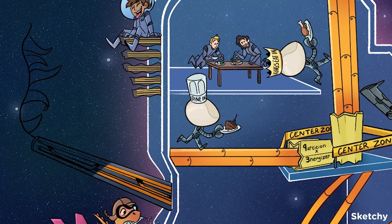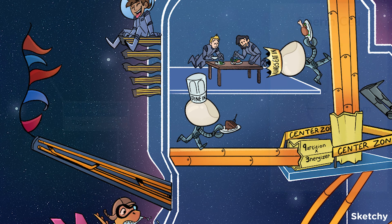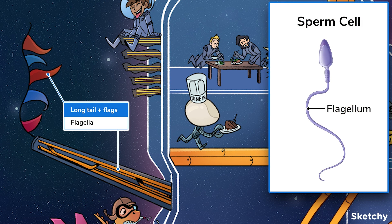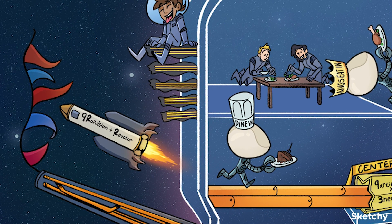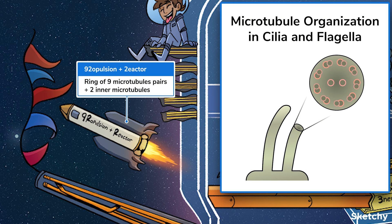Eukaryotic flagella are longer tail-like structures made of microtubules that allow an entire cell to move. Not all cells have flagella — they're only found in cells that need to travel, like sperm. We've represented flagella with these flags trailing behind a tail-like space structure. Notice the 9 and the 2 in that rocket's propulsion and reactor label? They represent the 9+2 microtubule structure of eukaryotic cilia and flagella. Both structures are made of a ring of 9 pairs of microtubules — which is actually 18 total tubes — with 2 tubules running through their middle.